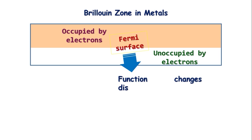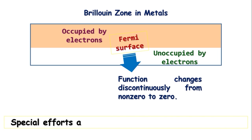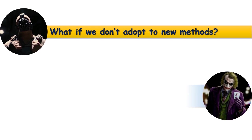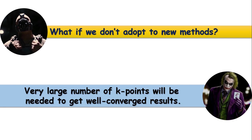Question is, what happens if we don't adapt to new methods? Well, the answer is, it's just that, then very large number of k-points will be needed to get well-converged results. Okay, actually I am a fan of the Dark Knight series. I hope many of you are too. Especially the Joker and of course the philosophy of the Batman. However, that is not a topic of DFT. Let's move on.